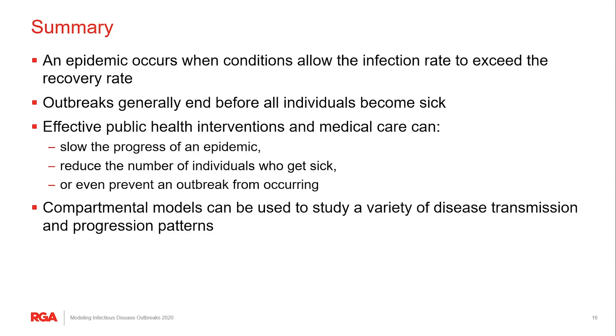And third, that property of SIR models means that effective public health and medical interventions can potentially slow the progress of an epidemic, they can reduce the percentage of a population that gets sick, and potentially if enough people can become vaccinated, you can prevent an outbreak from occurring in the first place.